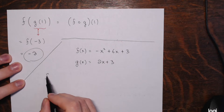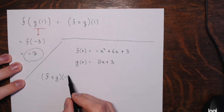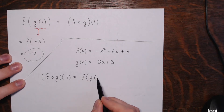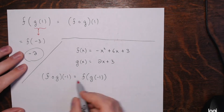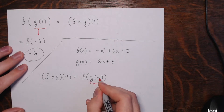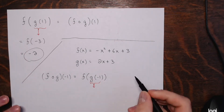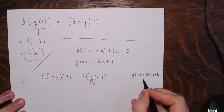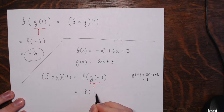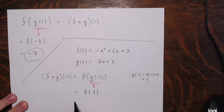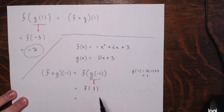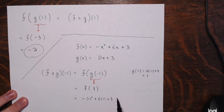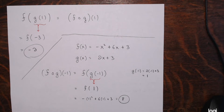We want f of g of negative 1. Working inside out, negative 1 gets plugged into g first. g of negative 1 is 2 times negative 1 plus 3, which is negative 2 plus 3, that's positive 1. Then that positive 1 goes into f. f of 1, replacing all the x's with 1, is negative 1 times 1 squared plus 6 times 1 plus 3, which is negative 1 plus 9, that's positive 8. So f of g at negative 1 is positive 8.